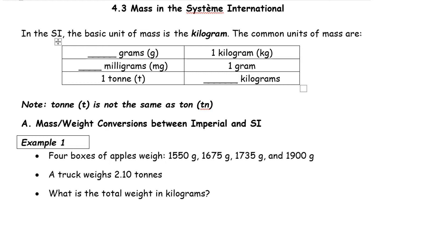A couple of important things we need to know: there are 1,000 grams in a kilogram, there are 1,000 milligrams in a gram, and there are 1,000 kilograms in a ton.